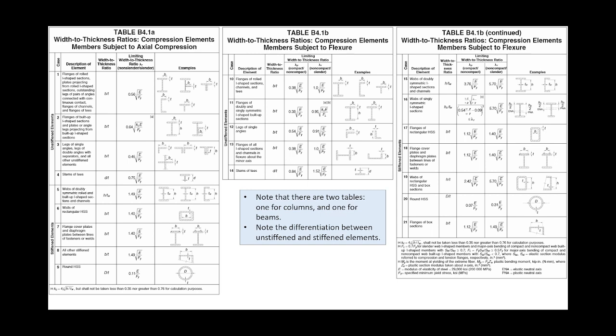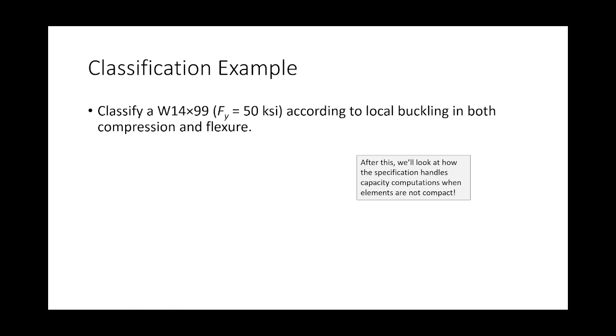Look at the very left of the table. You'll see two groups: cases 1 to 4 and cases 5 to 9. The difference is unstiffened versus stiffened elements. For unstiffened elements, we consider flanges of rolled I-shapes — case 1 — and compare the width-to-thickness ratio against 0.56 times the square root of E over Fy. Stiffened elements are case 5, covering webs of doubly symmetric rolled and built-up I-shaped sections and channels. I want to classify a W14×99 to see how it behaves according to local buckling in both compression and flexure.